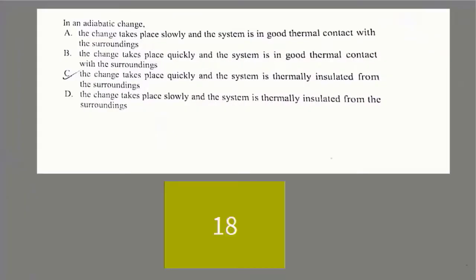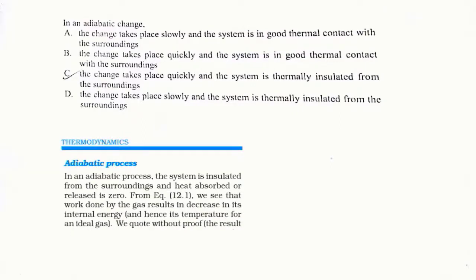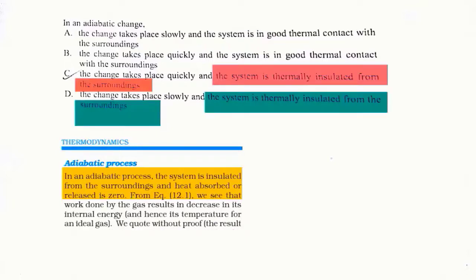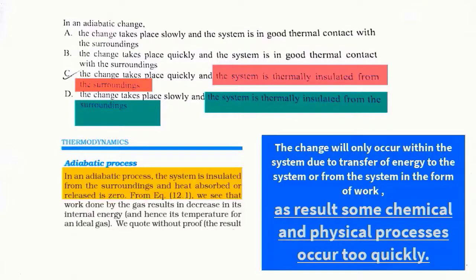In an adiabatic process, which one will be the correct option? From thermodynamics, an adiabatic process means the system is insulated from the surroundings. Looking at the third and fourth options, the second part — the system being thermally insulated from the surroundings — is satisfied by both. Since the system is insulated, energy transfer occurs only in the form of work within the system. The last part states that some chemical and physical processes occur too quickly, which means option C satisfies that condition.